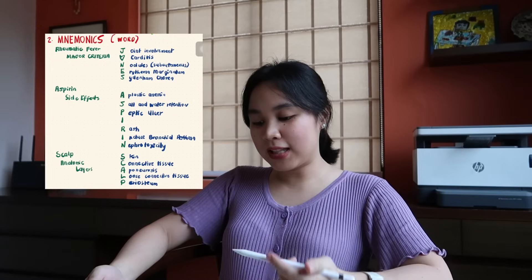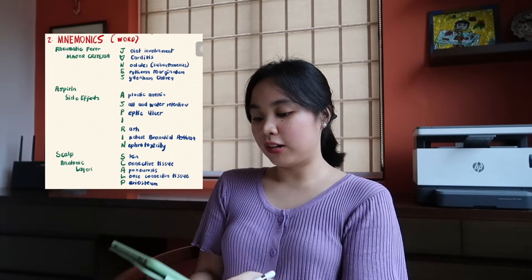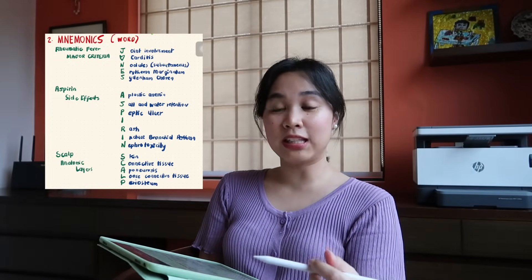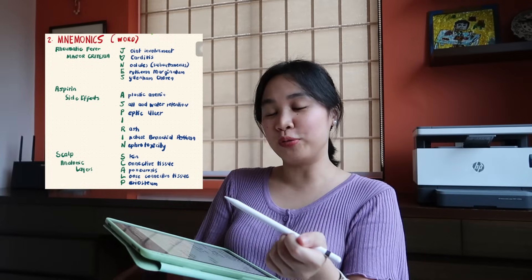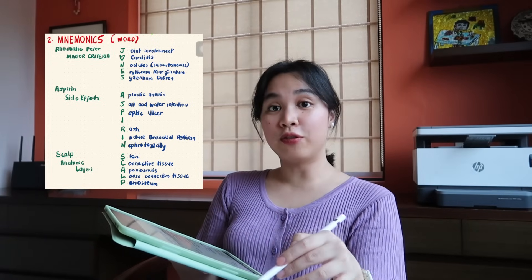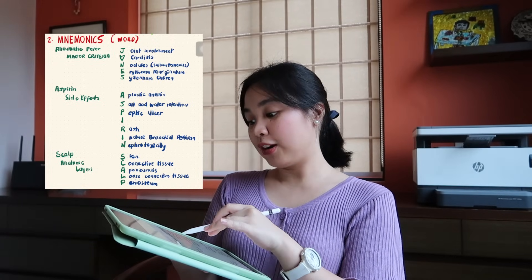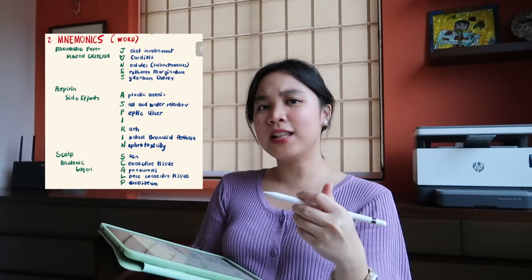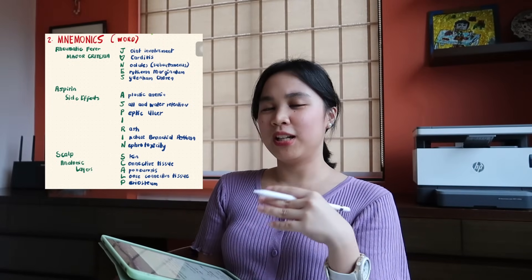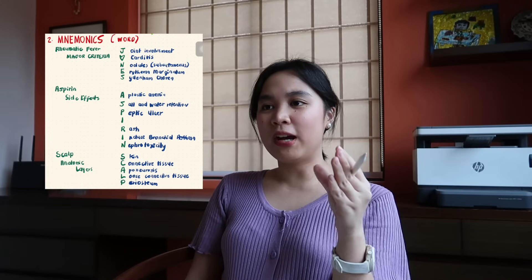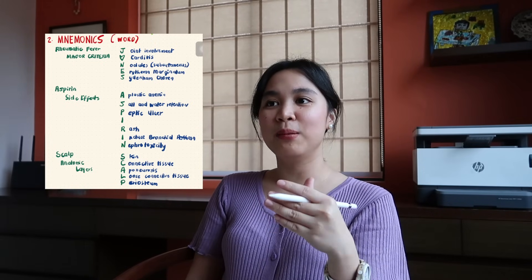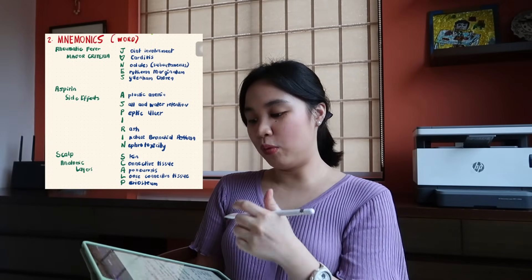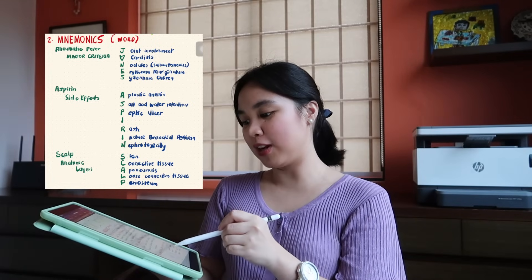When it comes to mnemonic phrases, it can be harder to remember because sometimes they don't make sense, and even when they do, we tend to forget them. That's why there are also word mnemonics — and those are actually easier to memorize. For example, for rheumatic fever and its major criteria, you just memorize the word 'JONES' — joint involvement, carditis, nodules, erythema marginatum, and Sydenham's chorea.